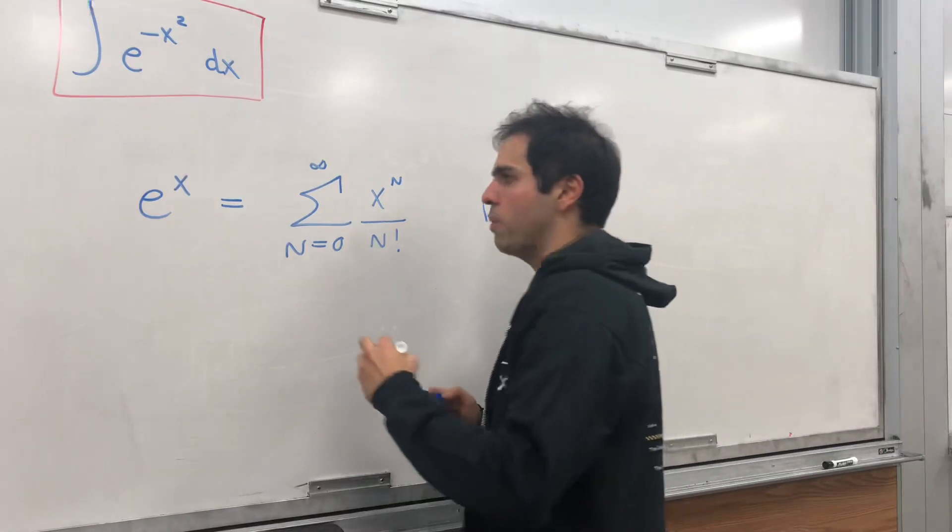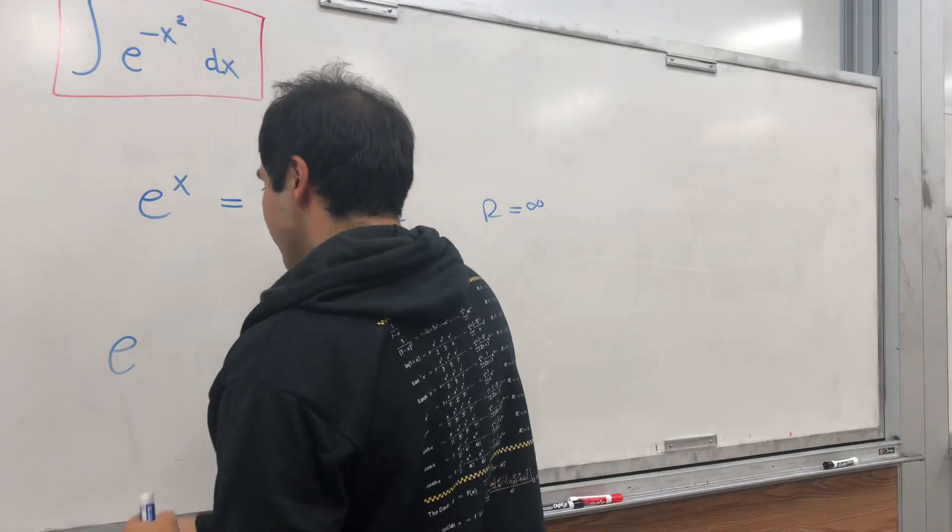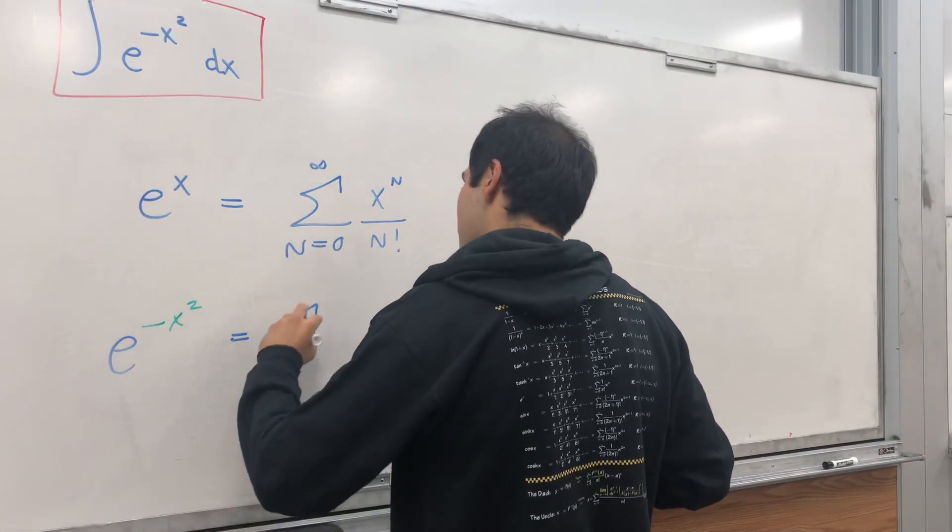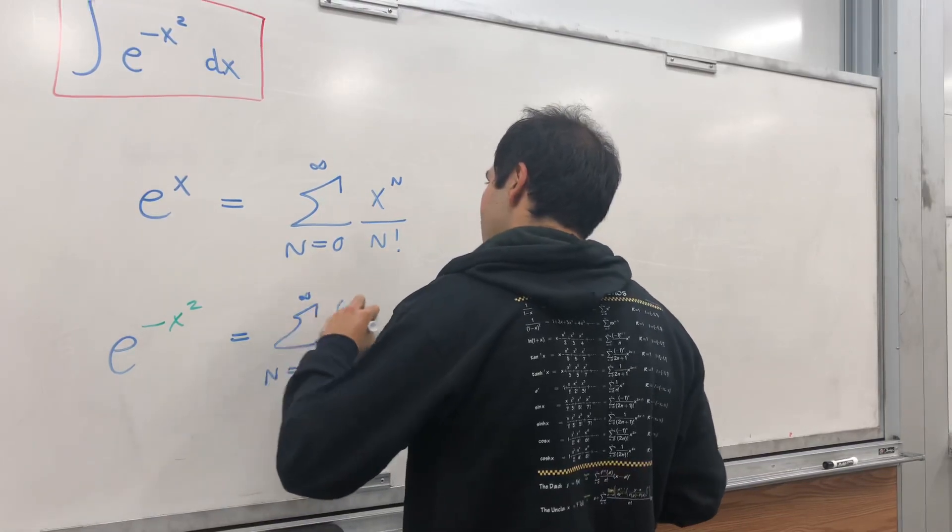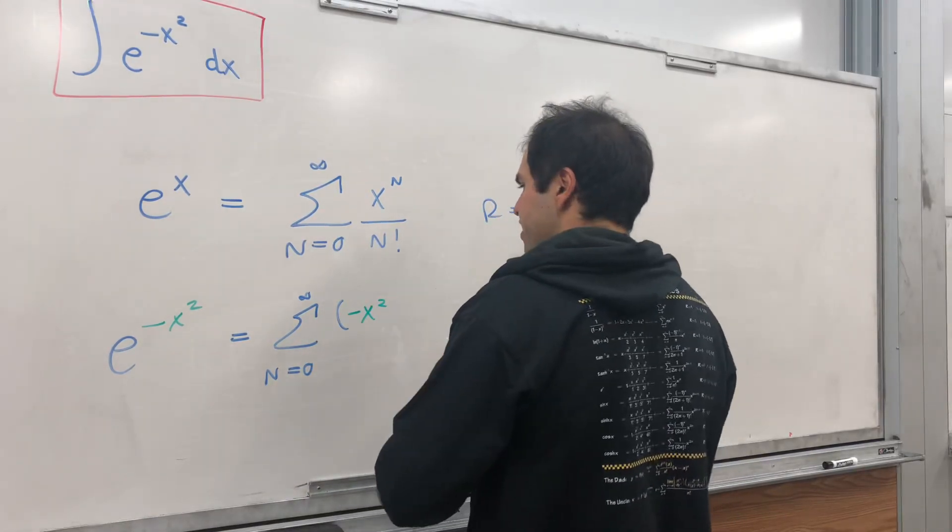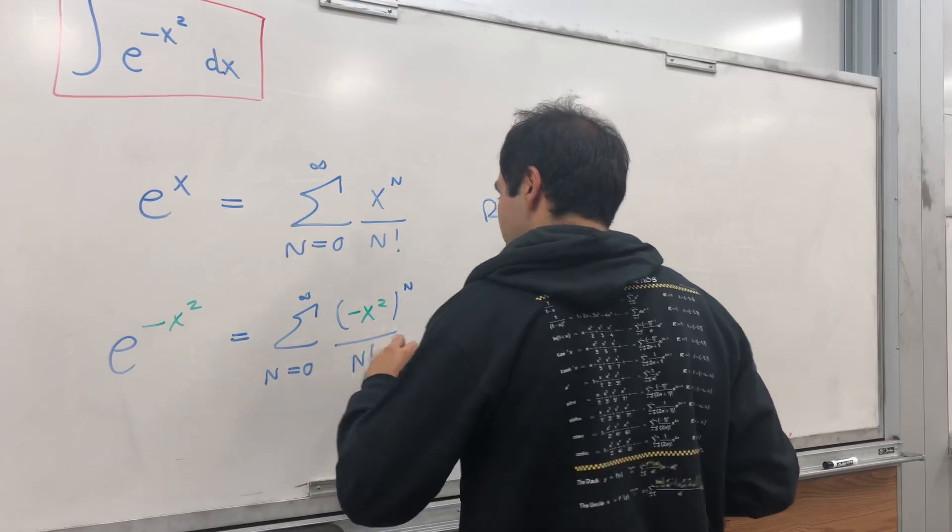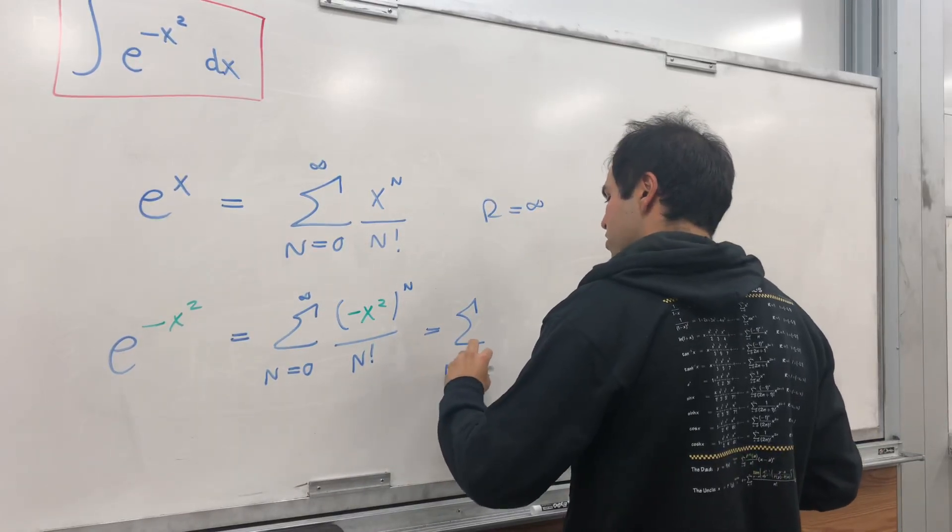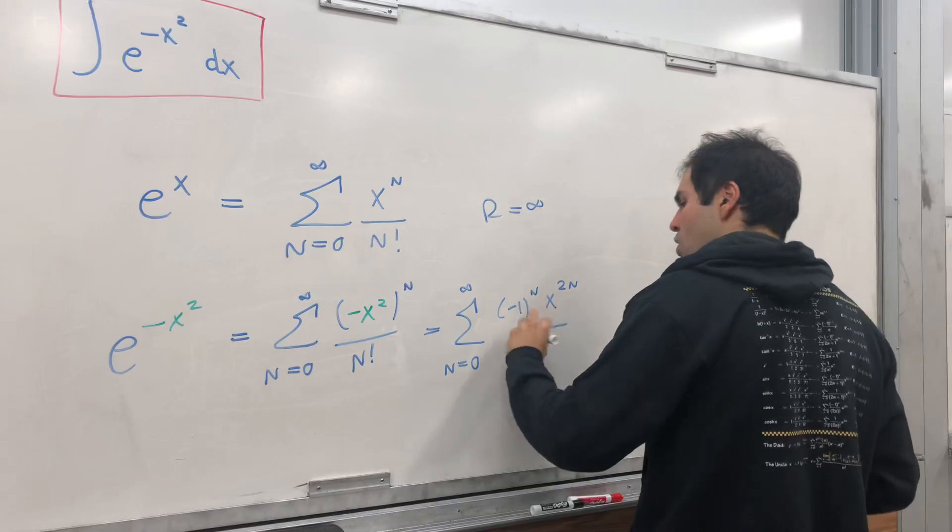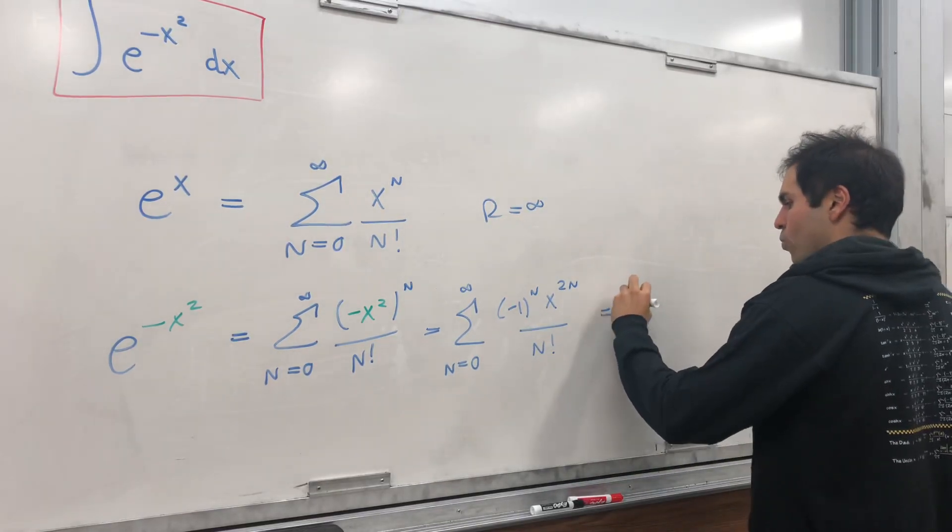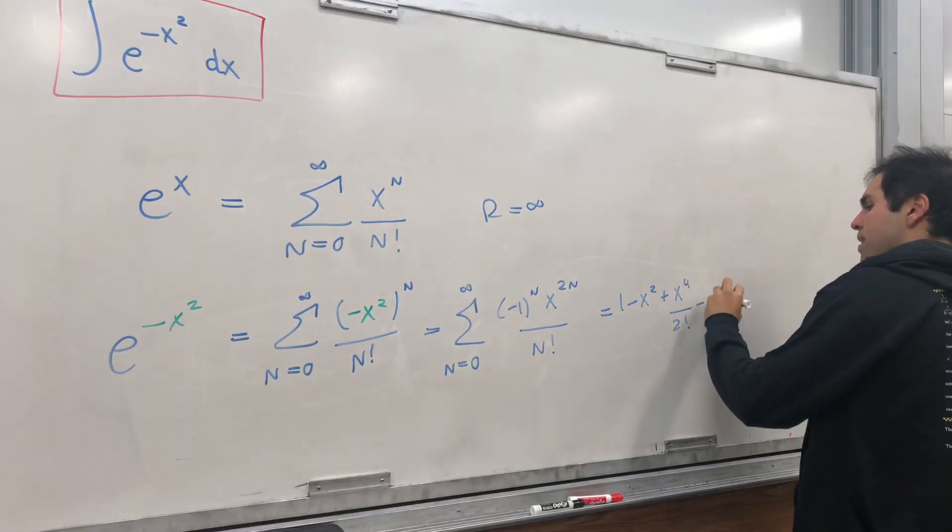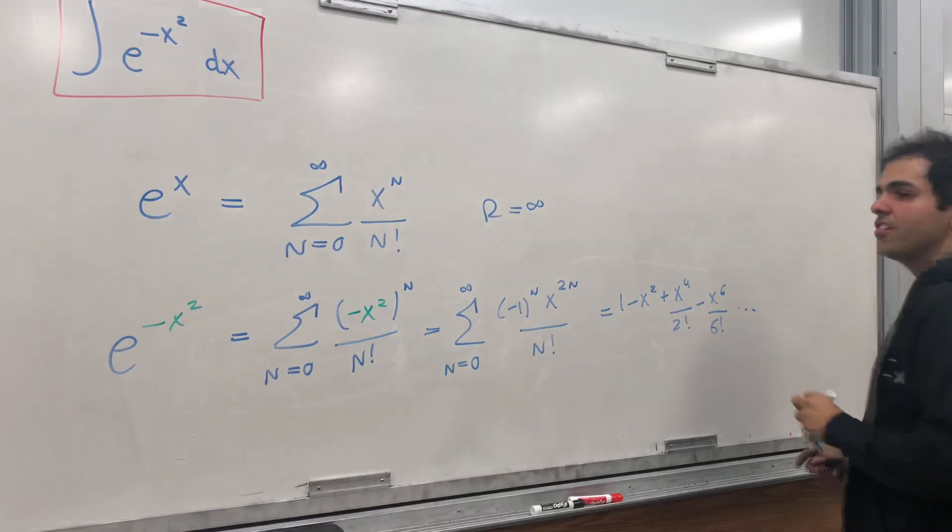In particular, you can literally just plug in negative x squared for that. So e of negative x squared is sum from n from zero to infinity of negative x squared to the n over n factorial. And that gives you a sum from zero to infinity of negative 1 to the n, x to the 2n over n factorial, which becomes 1 minus x squared plus x to the 4th over 2 factorial minus x to the 6th over 6th factorial, etc.